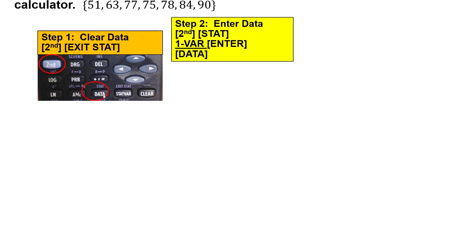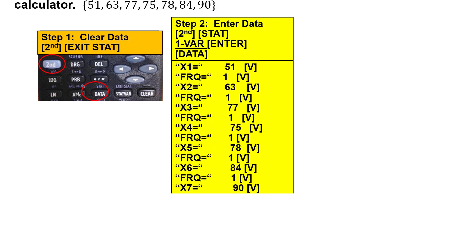Okay what's next? Hit data that's right and when you hit data you're gonna enter your data values. Notice the frequencies are all one in this data set so all you have to do is arrow down past the frequency to put in the next data value. So you put in 51 arrow arrow 63 arrow arrow 77 arrow arrow and so on.